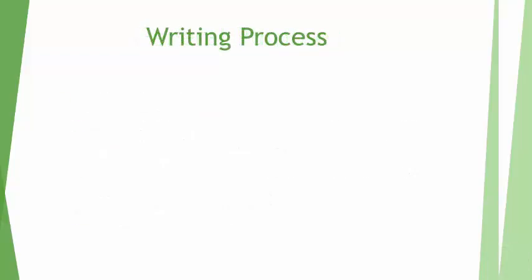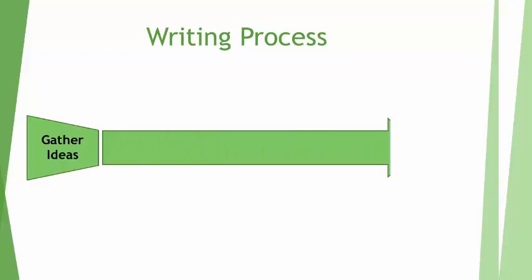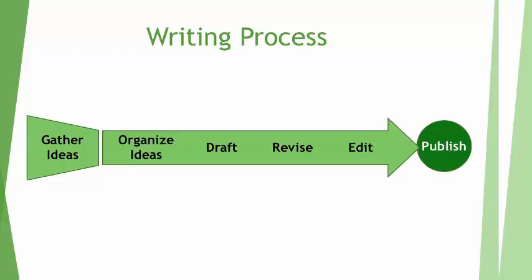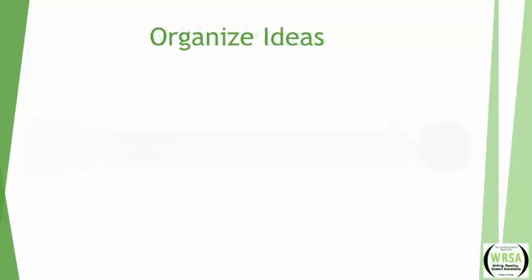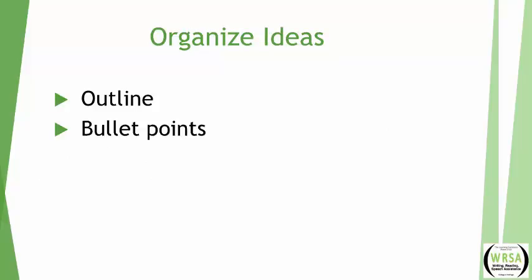When you're doing the writing process, there are several steps: you gather ideas, organize them, draft, revise, edit, and finally publish when you send them in. Today we're just going to talk about the organizing part. You're not really writing at this point — you're taking the information you've gathered and putting it together in some order to allow you to write. For me, this is some sort of outline or bullet points so I can see how I'm going to put it together.